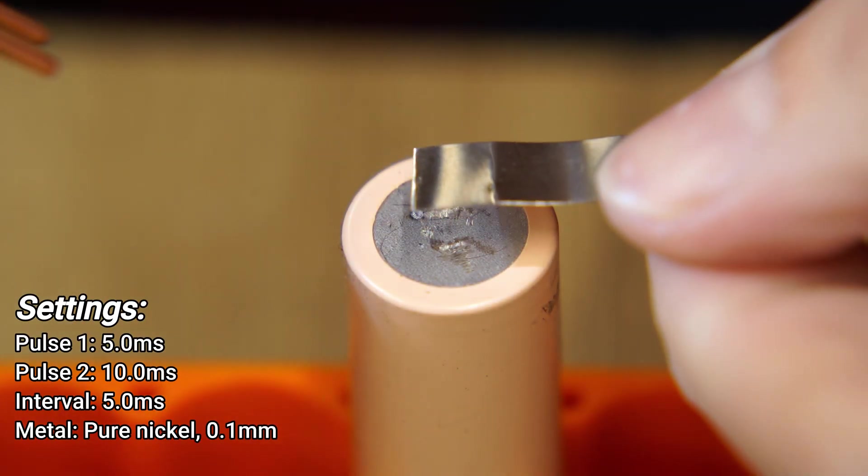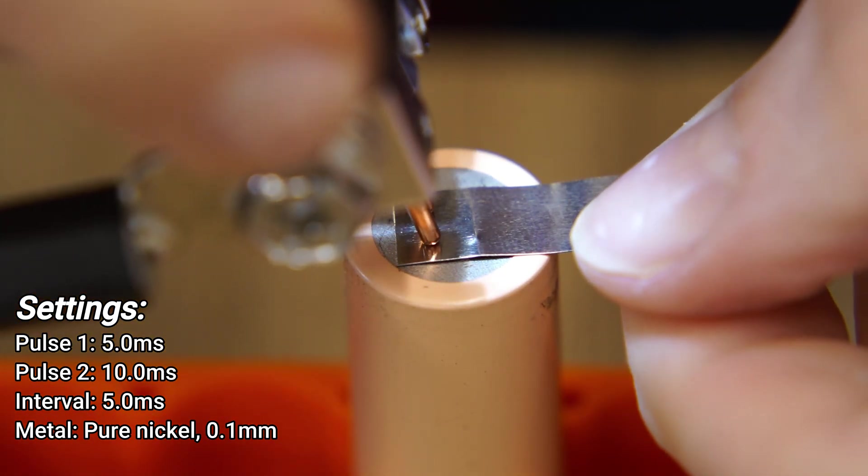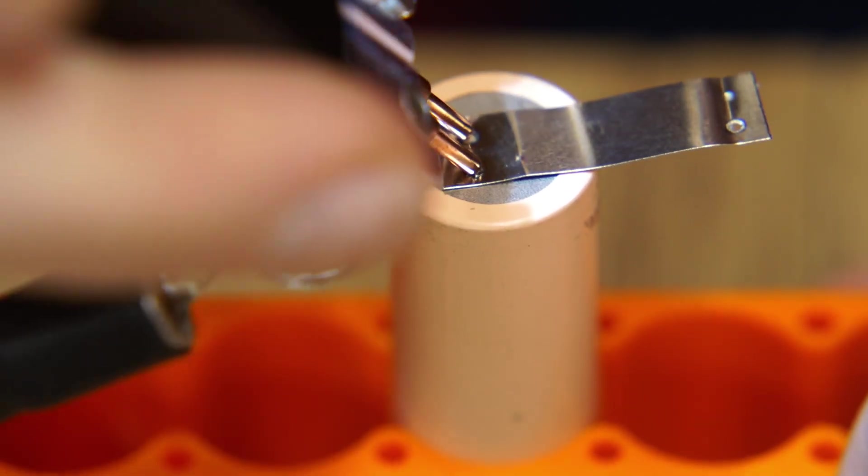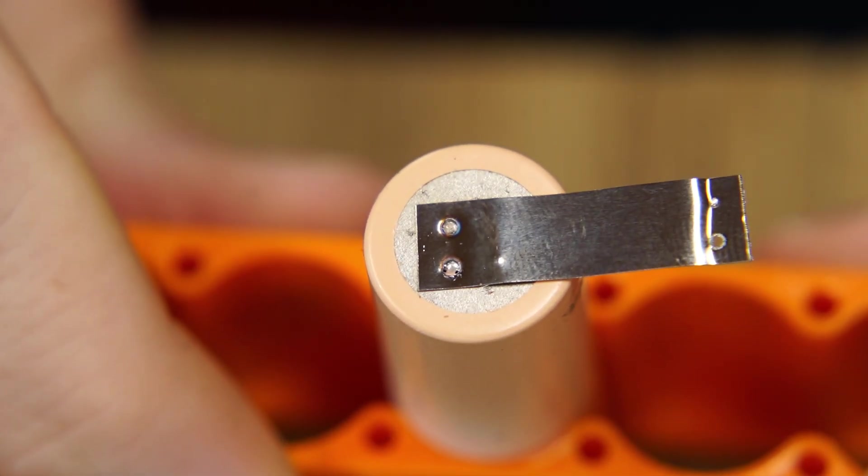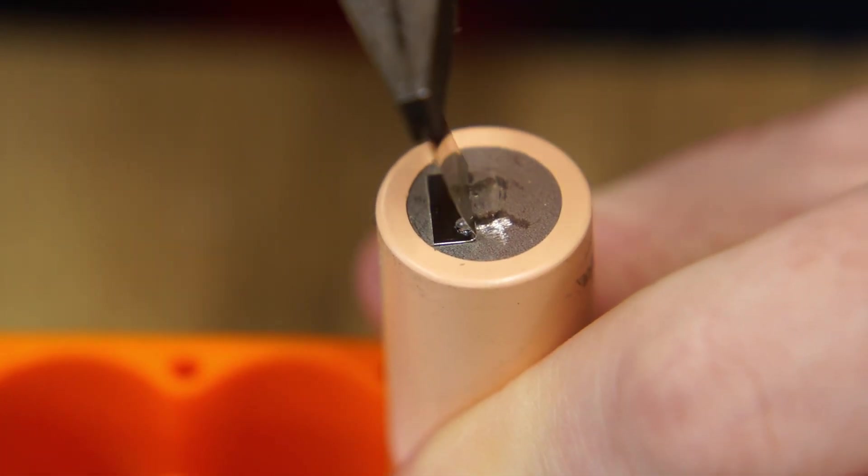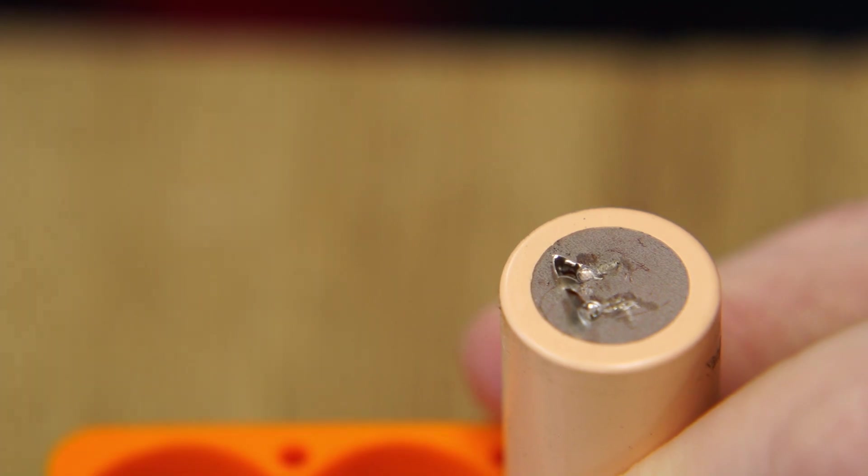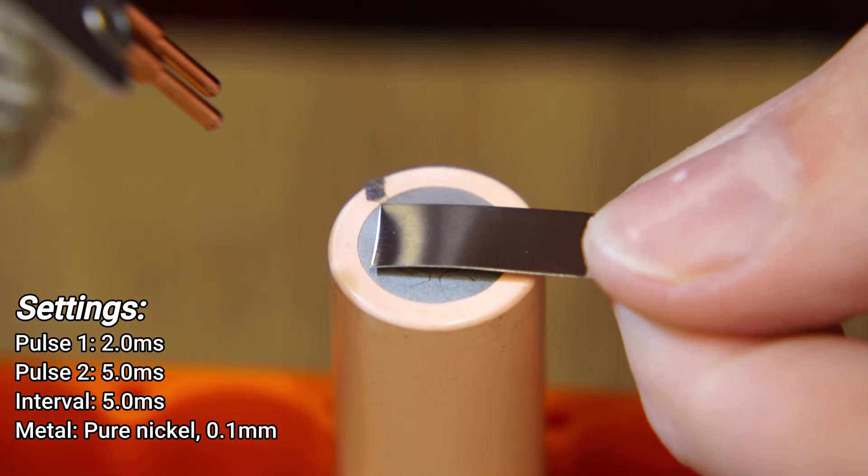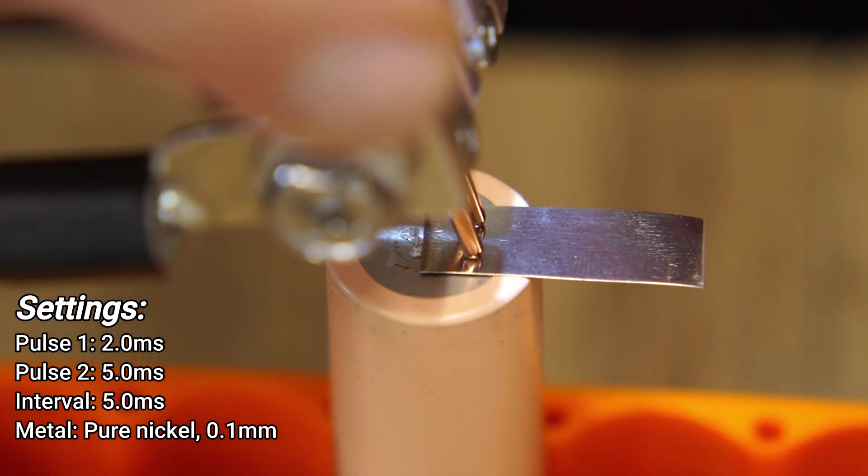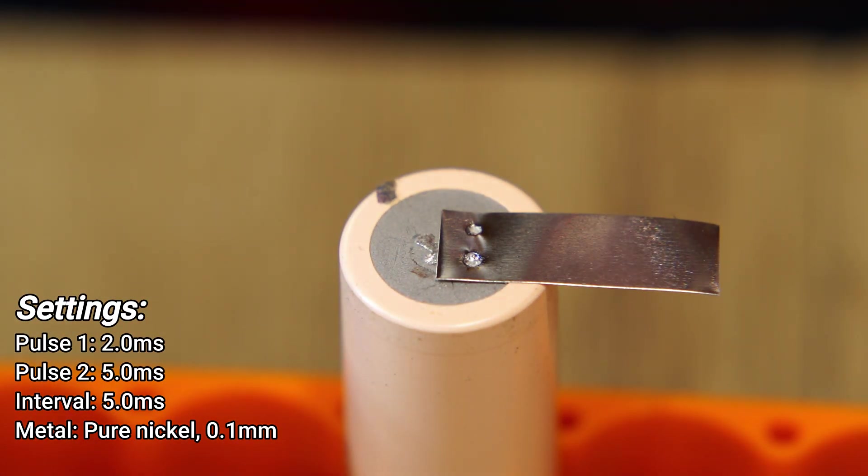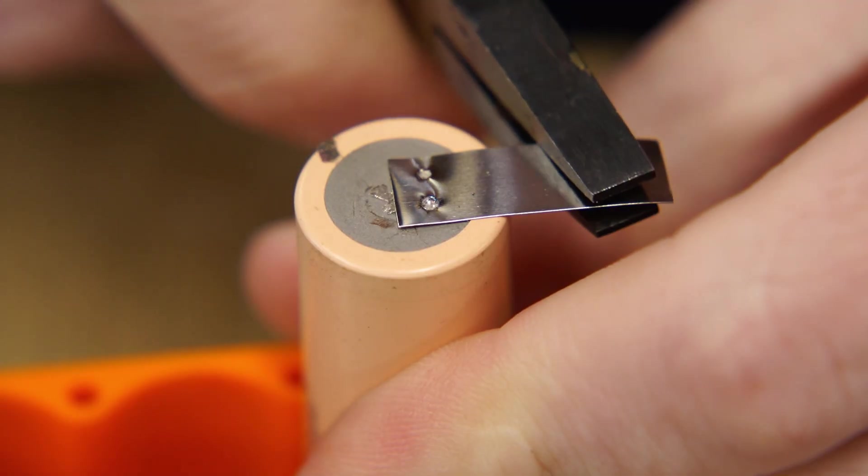For my first welds I'll be using pure nickel strip that is 0.1 millimeters thick. Although the strip is firmly welded to the battery cell, the weld was too hot and partially burnt through the strip. So I'll reduce the pulse time for the next weld. This produced a solid spot weld without burn through.